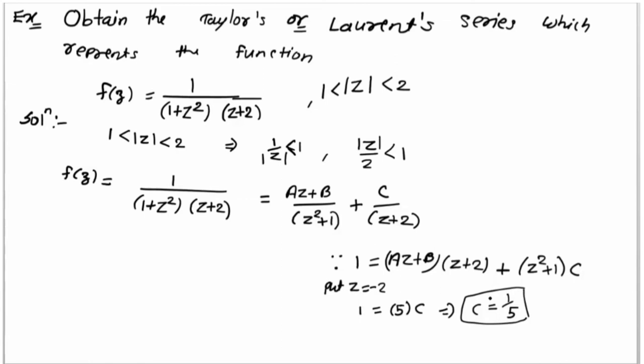Next find A and B. Put z = 0. Left hand side 1 equals right side: B into 2 plus C. C is 1/5. So 1 = 2B + 1/5, which gives 2B = 4/5, so B = 2/5.